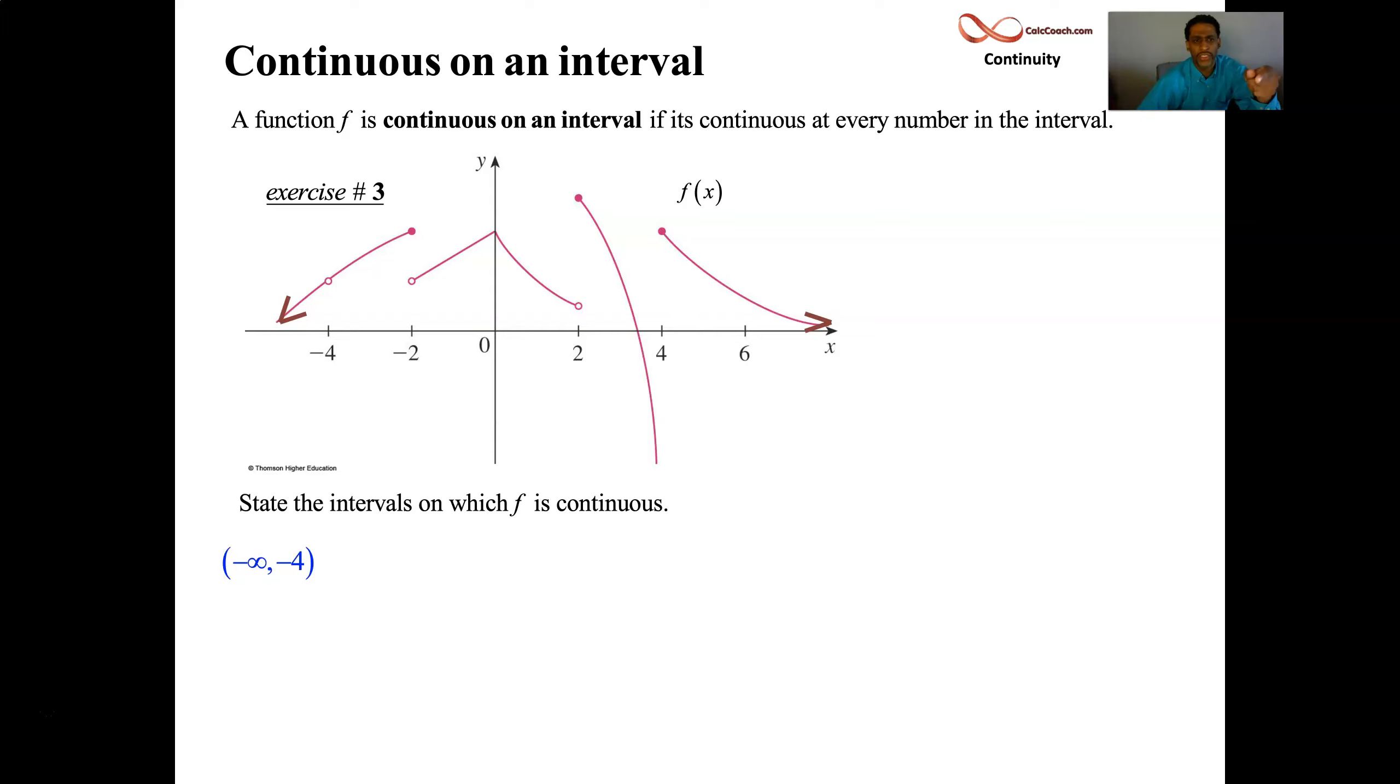We said that it's a removable discontinuity. So for that whole chunk of x values, though, from minus infinity to minus 4, you're continuous. You're not continuous at minus 4, though, so you have to use parentheses there.